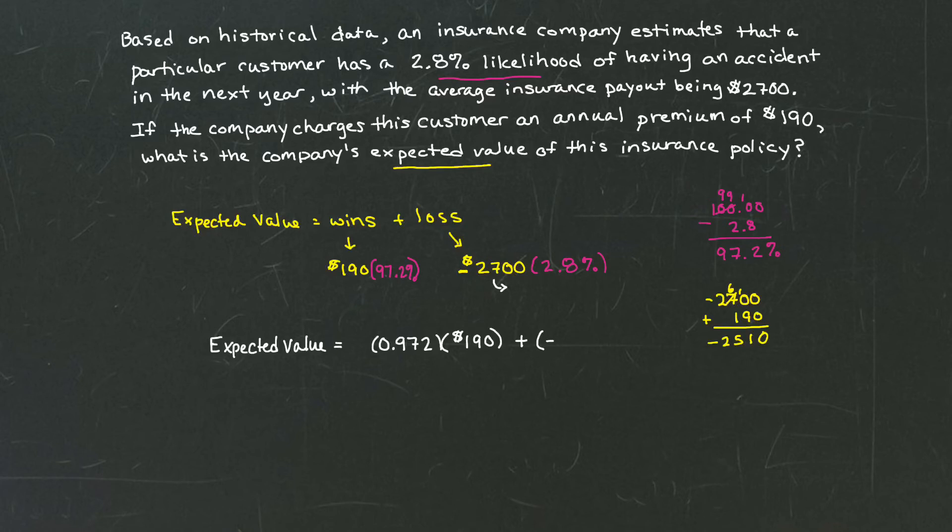Let me put that percentage in first. 2.8% is 0.028, just to make it symmetric with the previous part. And then we're going to take our loss, which is negative $2,510. This is the equation that will give us the expected value of the insurance policy based on the company.